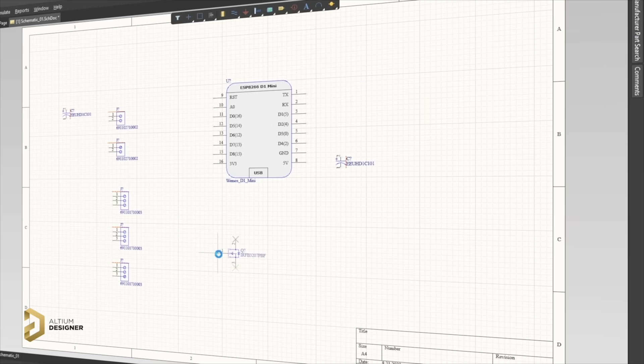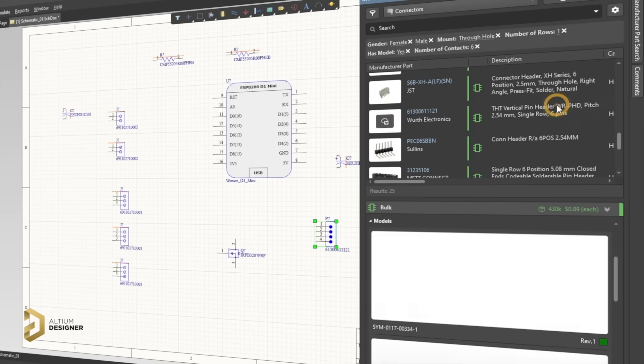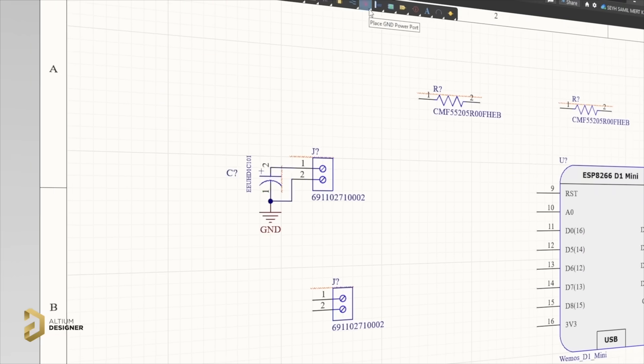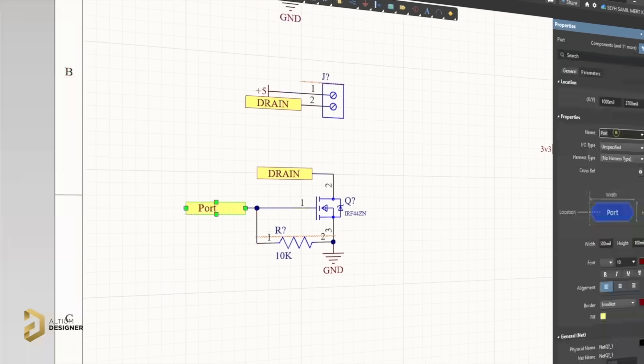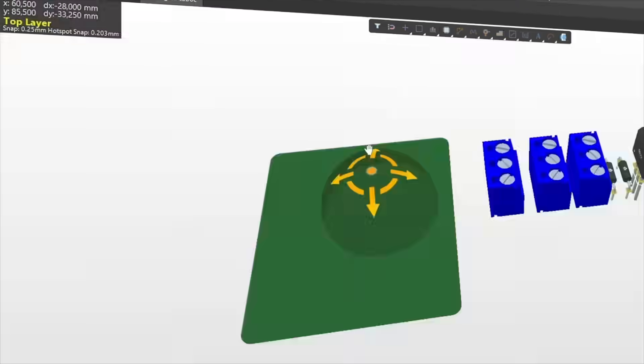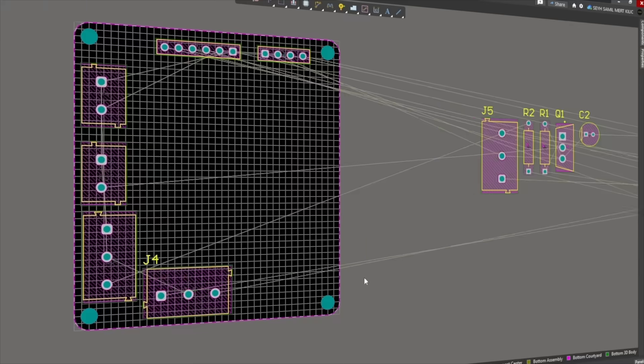Once all components have been added to the circuit diagram, the circuit connection process begins. You can get the circuit diagram, bill of materials, PCB Gerber files, and more from the link in the video description.